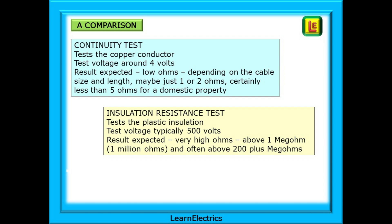The continuity test is checking the copper conductor with a test voltage of around 4 volts. The result expected is a low ohms result and depending on the cable size and length it is perhaps just one or two ohms of resistance, and certainly less than five ohms for a domestic property. Knowing what values to expect will become familiar to you with practice.